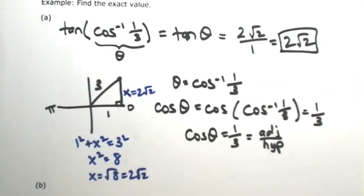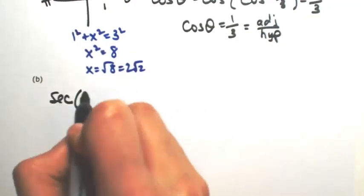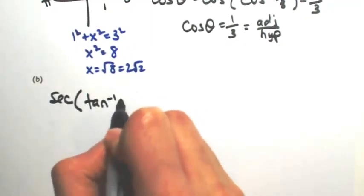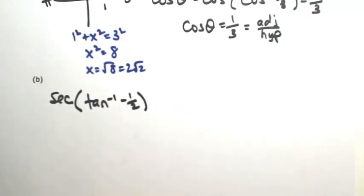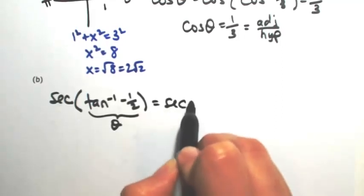Okay, let's try another one just like that. Let's say we have the secant of the inverse tangent of negative 1 half. So again, inverse trig functions are just angles, so this is really the secant of some angle.